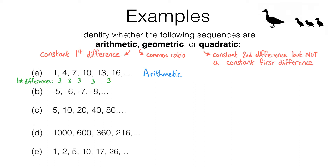Again, let's look at the first differences. To go from negative 5 to negative 6 we need to add negative 1. To go from negative 6 to negative 7 we need to add negative 1. To go from negative 7 to negative 8 we need to add negative 1. So we can see these first differences are constant — they're staying the same. That means again we have an arithmetic sequence.